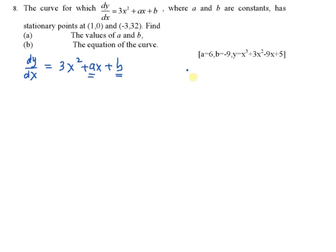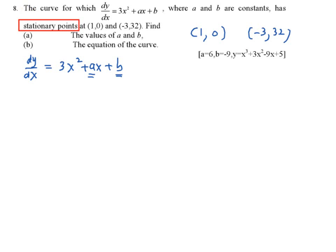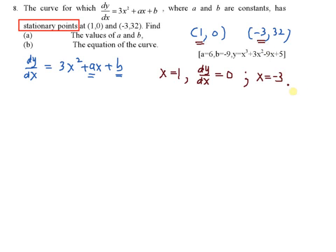There is a stationary point at (1, 0) and (-3, 32). What is actually a stationary point? A stationary point can be the maximum or minimum point. Whenever you see a stationary point, this implies dy/dx equals 0. So when x equals 1, dy/dx equals 0, and when x equals negative 3, also a stationary point, dy/dx also equals 0.